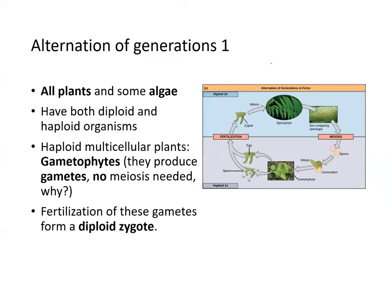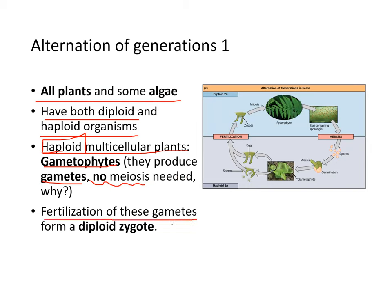For alternation of generations, all plants and some algae have this form — they have both diploid and haploid organisms. Haploid multicellular plants are called gametophytes; they produce gametes without needing meiosis because they are already haploid, only needing mitosis. Fertilization of these gametes produces a diploid zygote.